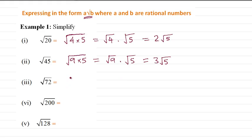72 can be written as 36 times 2. Then we split, it's root 36 times root 2. So square root of 36 is 6, then we write next to it root 2.